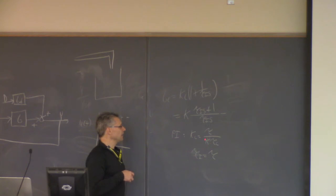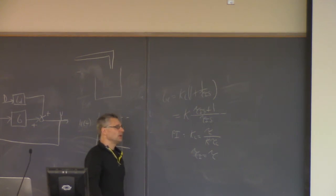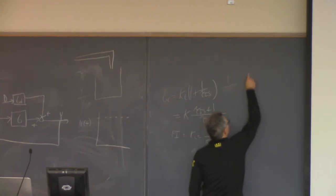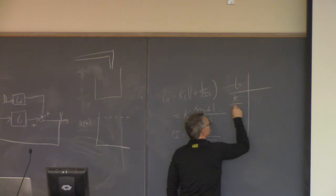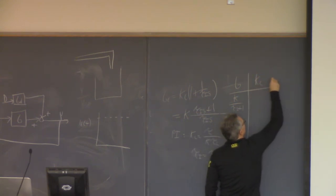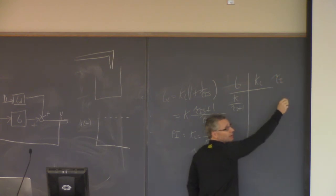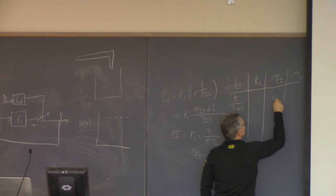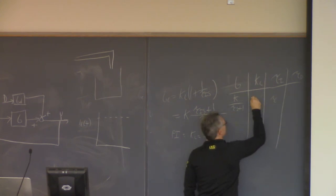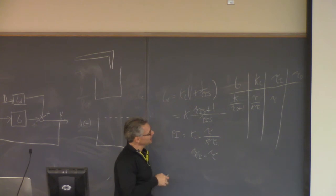So this is another way to tune a PI controller. If you have the first-order transfer function available, you know K and tau. You pick tau_c, and now you have Kc and tau_i values — you have a PI controller. In the book, Table 12.5 has a whole table of these formulas: for this transfer function, Kc equals tau/(K * tau_c) and tau_i equals tau.